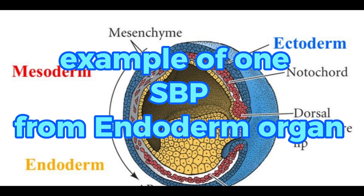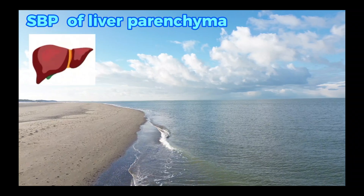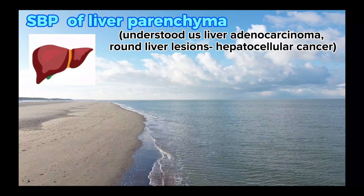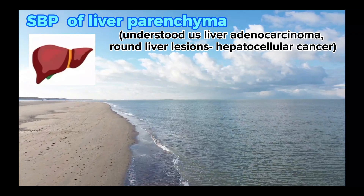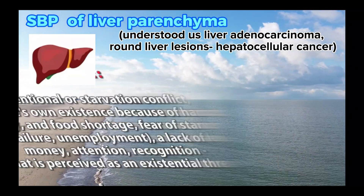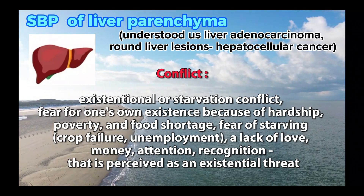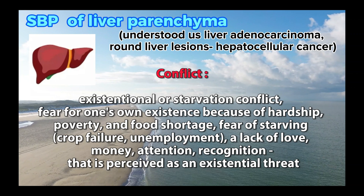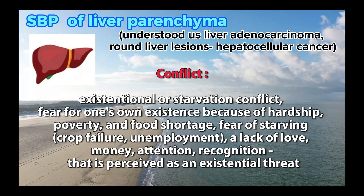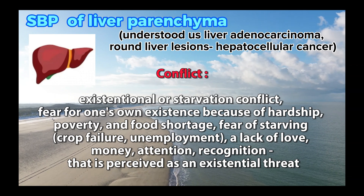Example of one special biological program from an endoderm organ — the special biological program of liver parenchyma. Understood as liver adenocarcinoma, round liver lesions, hepatocellular cancer. Conflict: existential or starvation conflict. Fear for one's own existence because of hardship, poverty, and food shortage. Fear of starving, crop failure, unemployment. A lack of love, money, attention, recognition that is perceived as an existential threat.